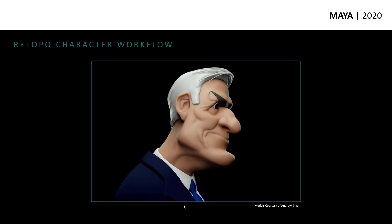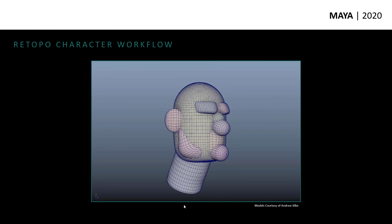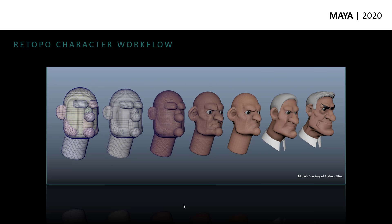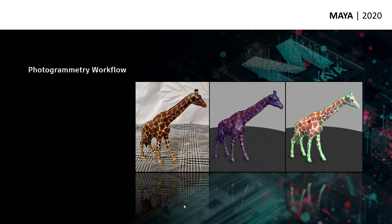Here you can see the full progression — just starting with a very simple form of primitive objects all the way to a pretty highly sculpted, nice looking end result for a character. The end result looks quite nice, a very impressive model. This also opens workflows for doing things like retopology of scan data and photogrammetry. So this could be scan data brought in through various techniques — I'm going to go over a photogrammetry workflow.